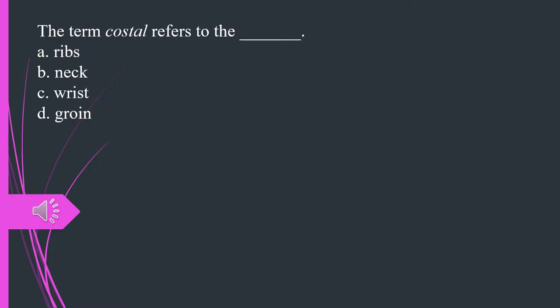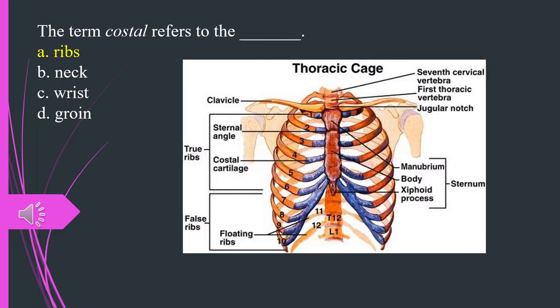The term costal refers to the, A. Ribs. B. Neck. C. Wrist. D. Groin. The answer is A. Ribs.